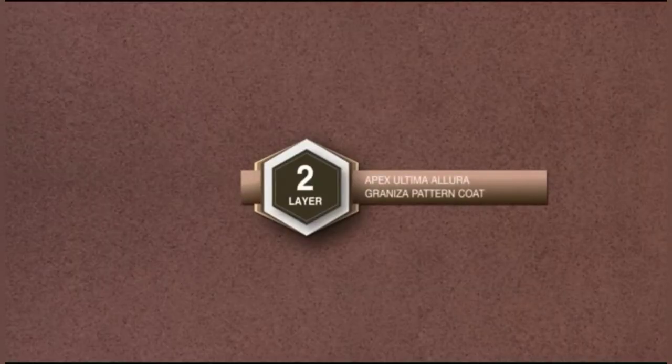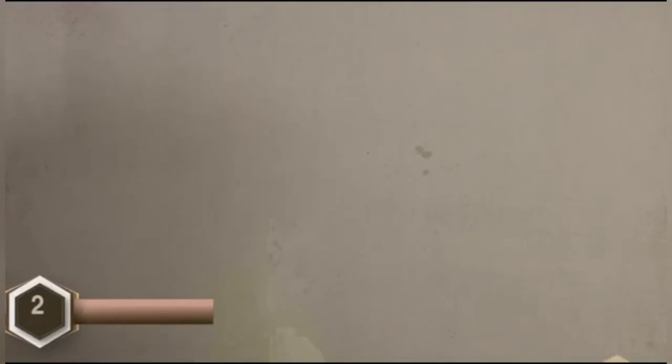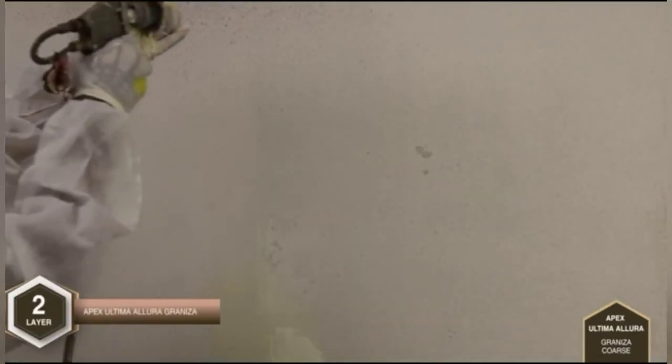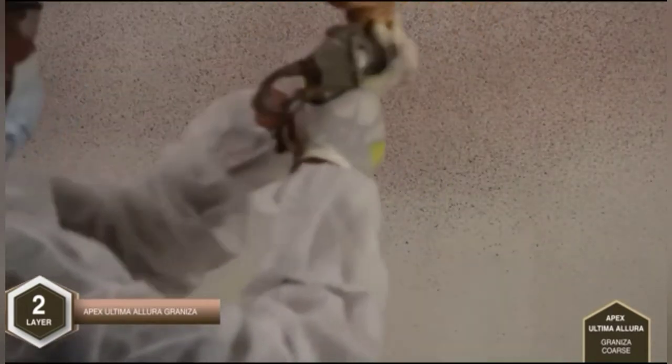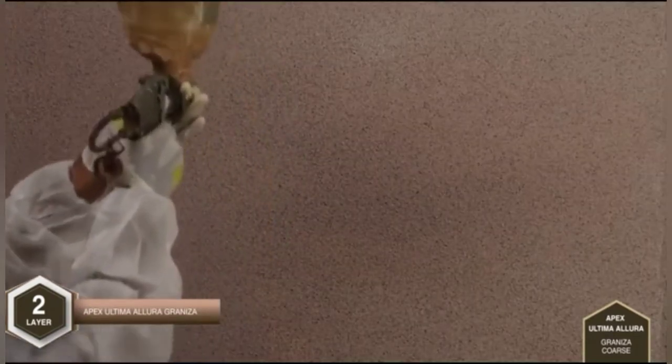Layer 2: Application of Apex Ultima Allura Granisa Pattern Coat. Fill up the funnel with sufficient volume of material. Apex Ultima Allura Granisa is then applied by means of an air-assisted texture spray gun, also known as Hopper Gun. The material is sprayed across the surface using the desired pressure and nozzle size to get the desired pattern.